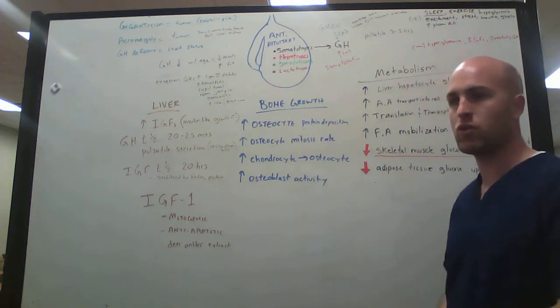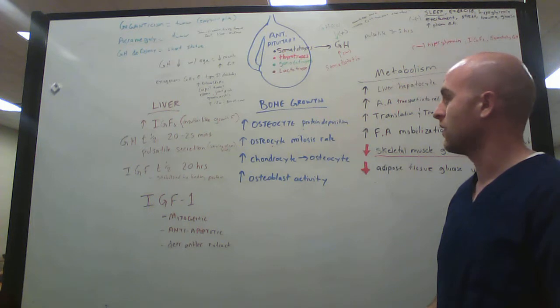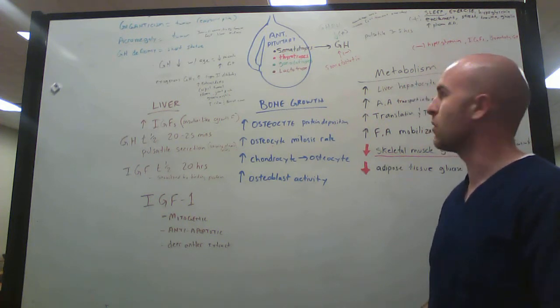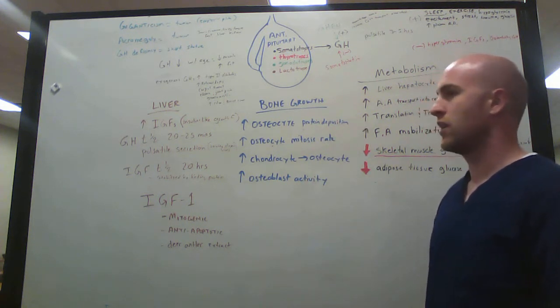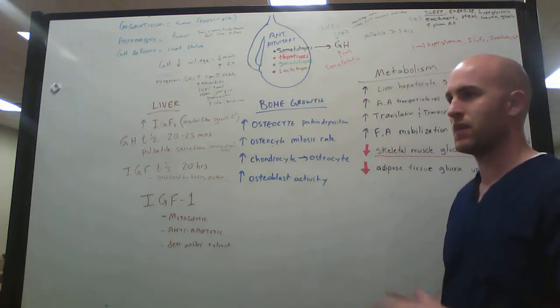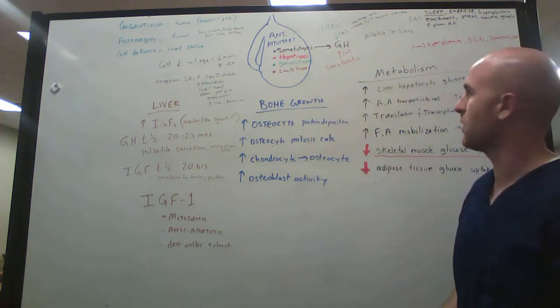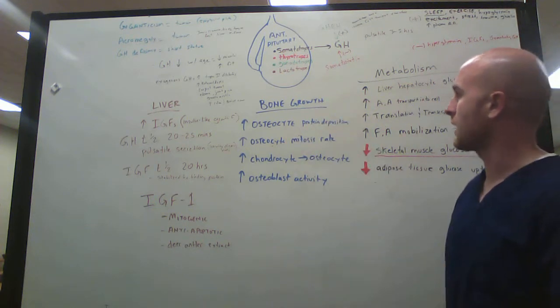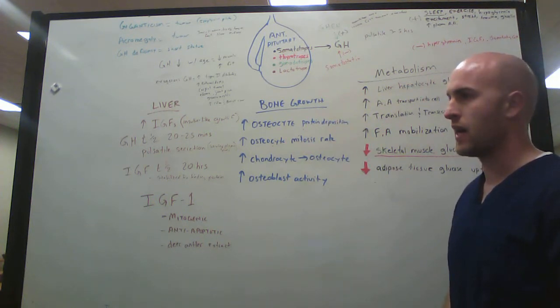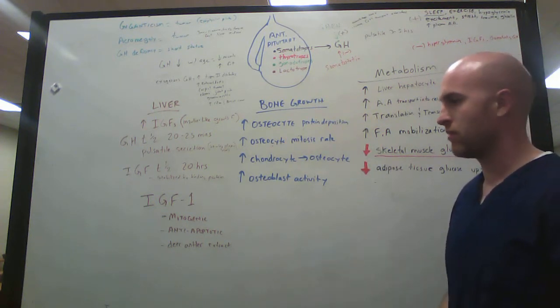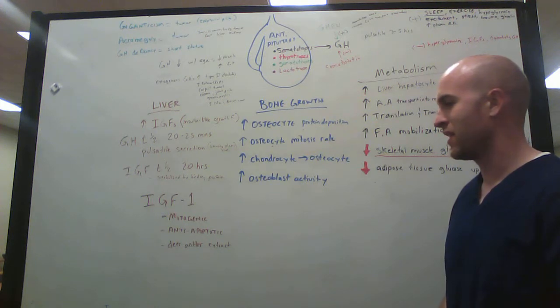Thyrotropes produce thyrotropin, thyroid hormone. Gonadotropes are the ones that produce luteinizing hormone and follicle-stimulating hormone. Lactotropes produce prolactin.